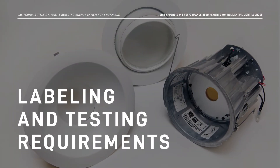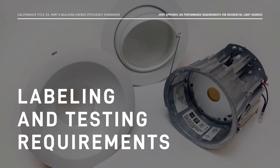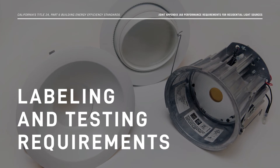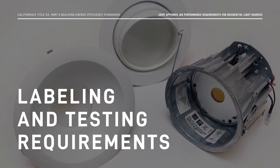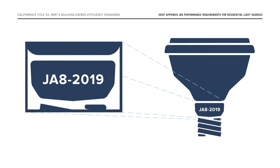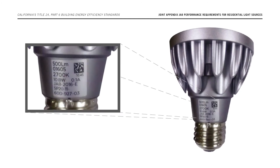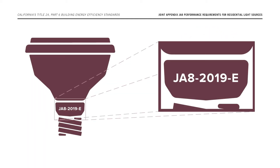In addition to these performance requirements, JA8 compliant products must also adhere to labeling requirements to help enforcement agencies, contractors, and consumers easily identify high-efficacy products. For light sources to qualify as high-efficacy under JA8, they must include either a JA8-2019 or JA8-2019E marking on the lamp or luminaire. Lamps or luminaires marked with JA8-2016 or JA8-2016E are also acceptable. Light sources marked with JA8-2019E have passed the elevated temperature life test, indicating they may be installed in elevated temperature applications such as enclosed and recessed fixtures.